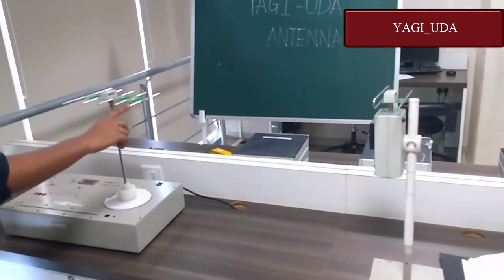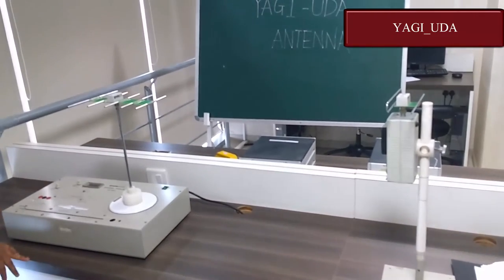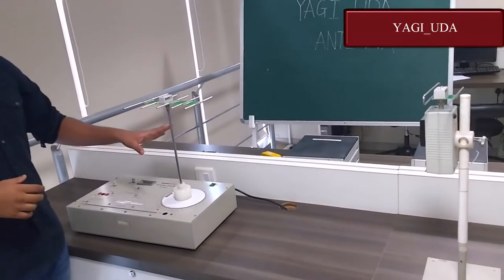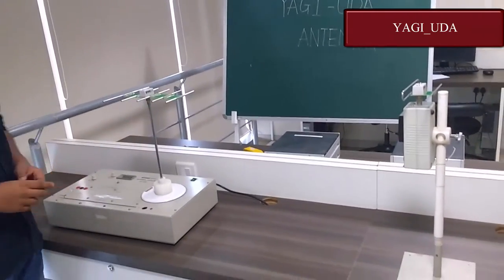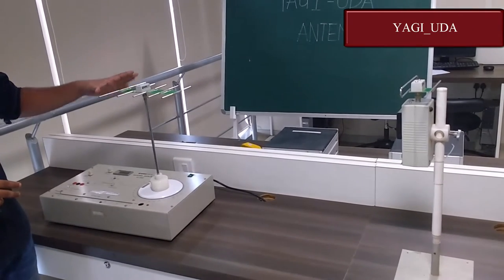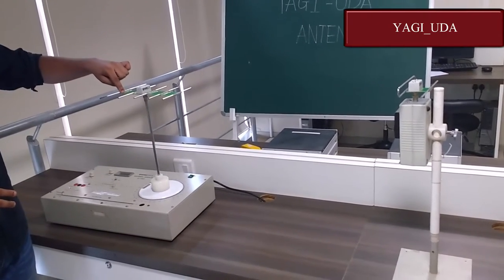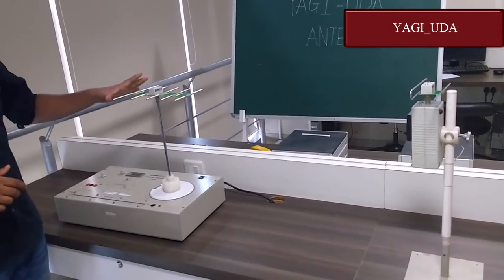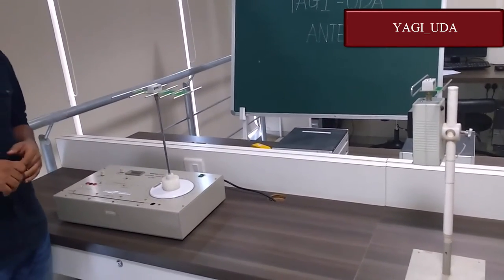These three dipoles are reflectors. So this is the Yagi-Uda antenna. These three elements are the director elements, this is the reflector element, and this element is called the driver element. The reflector element is always the longest one.